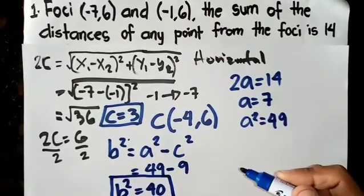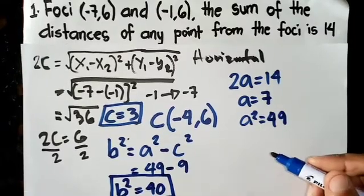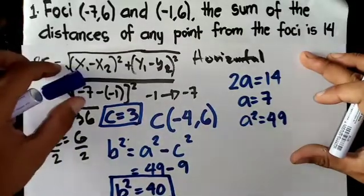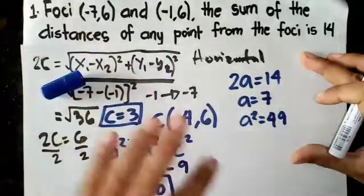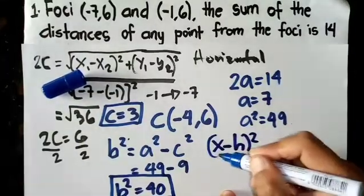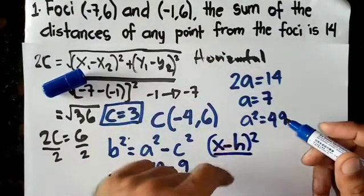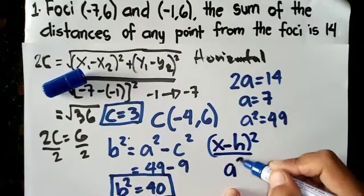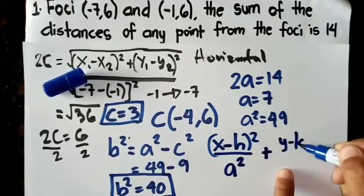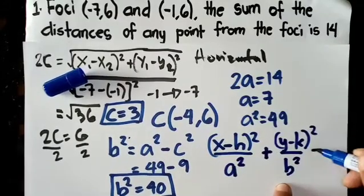So no need to get b because in the equation it's b squared and a squared. So b squared is 40. So horizontal, you have the center, you have a squared, you have b squared. You can directly get the equation. So (x - h)² over... Since it's horizontal, the x part has a bigger denominator, so a squared here. If vertical, a squared would be under y. (y - k)² over b² equals 1.